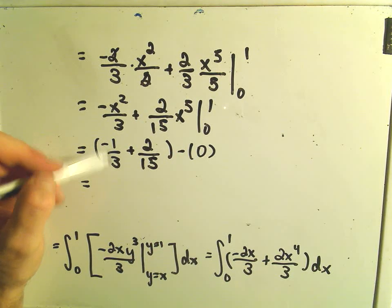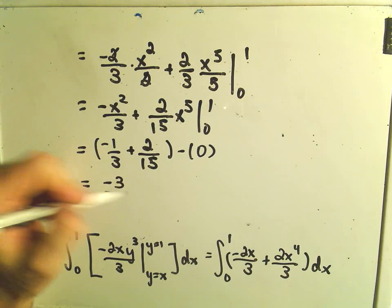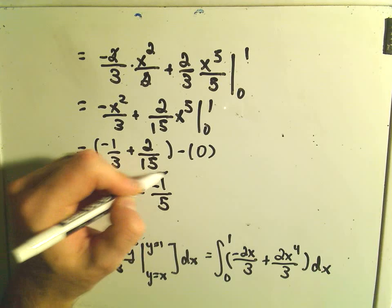So let's see, if we get common denominators, top and bottom by 5, we'd have negative 5 plus 2, which would be negative 3 over 15, or the value negative 1 5th.